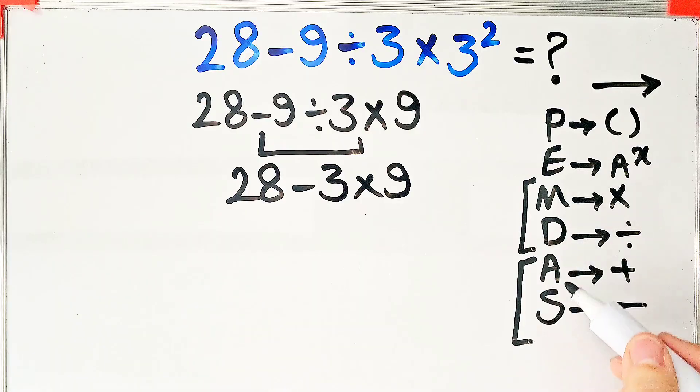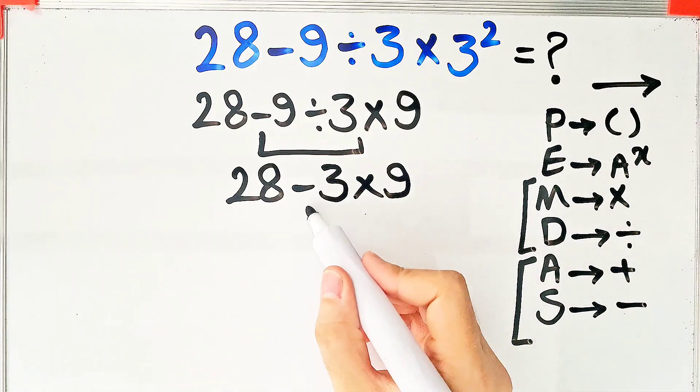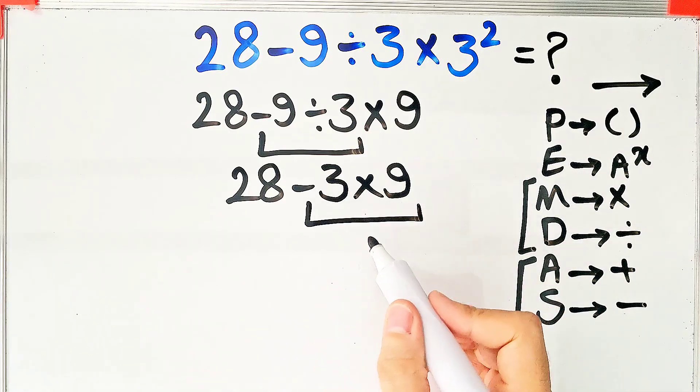Because the multiplication has higher priority than subtraction. Negative 3 times 9 equals negative 27.